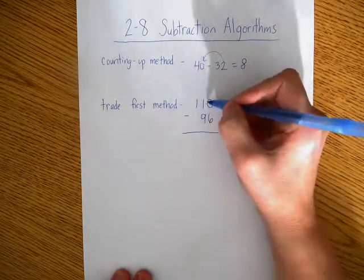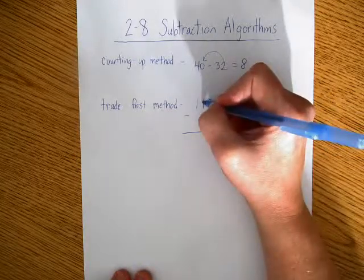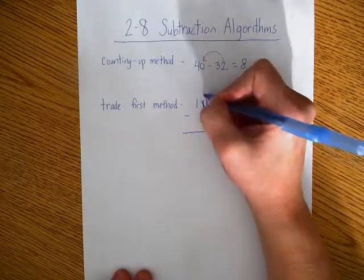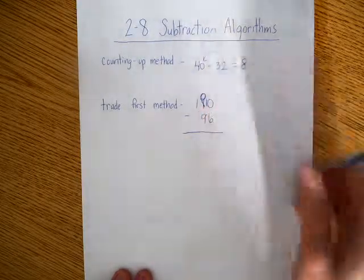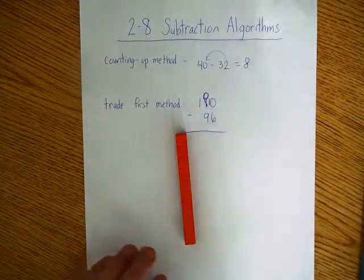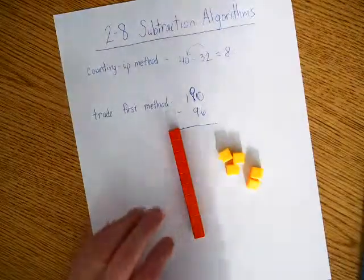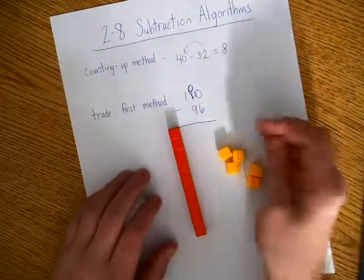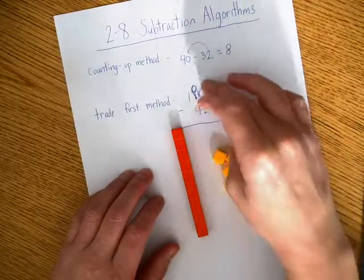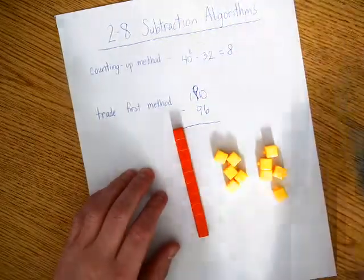With the trade first method, I can't do 0 minus 6. So what I'm going to do is I'm going to take this 10 here and I'm going to trade it and get a 0 here. So I just traded 110, one of these, for 10 ones essentially. And I'm going to use these 10 blocks to demonstrate that. So now I have 10 minus 6, and then 0 minus 9, so I can't do 0 minus 9.